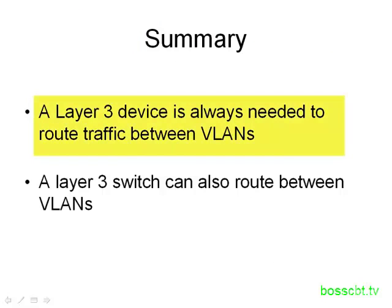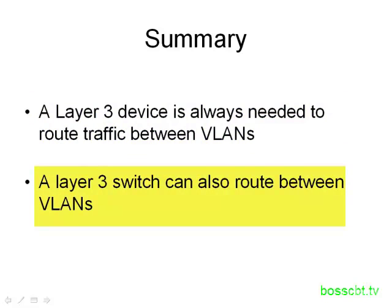To summarize what we covered: a Layer 3 device is always required when you want to send traffic between two VLANs. A Layer 3 device doesn't necessarily have to be a router - it simply has to have the functionality of a router. That means a Layer 3 switch, a switch that can perform the functions of a router, can also be used here. Sometimes people get too focused on needing a router, and when they see an actual implementation with no router involved, they start to question what they learned. Keep in mind that the device routing between VLANs may in fact be a Layer 3 switch with routing functionality built inside it. And that is the inter-VLAN routing tutorial. Thanks for watching.